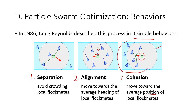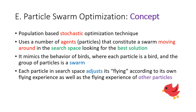The concept of PSO in AI is a population-based stochastic, or random, technique for optimization. A number of agents or particles are initialized and they move around in the search space looking for the best solutions. Particles act like birds, where each particle is a bird and the group of particles is a swarm.